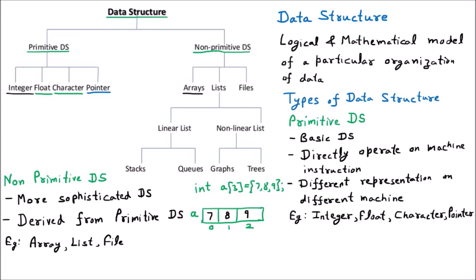The second non-primitive example is the list. Whenever we create any type of list or sequence — for example, entering values 7, 6, 3, 12 — some kind of data which we enter is called the list. The list is further categorized as linear and non-linear. Linear means data is in a specific sequence, and non-linear means it is not strictly in sequence.